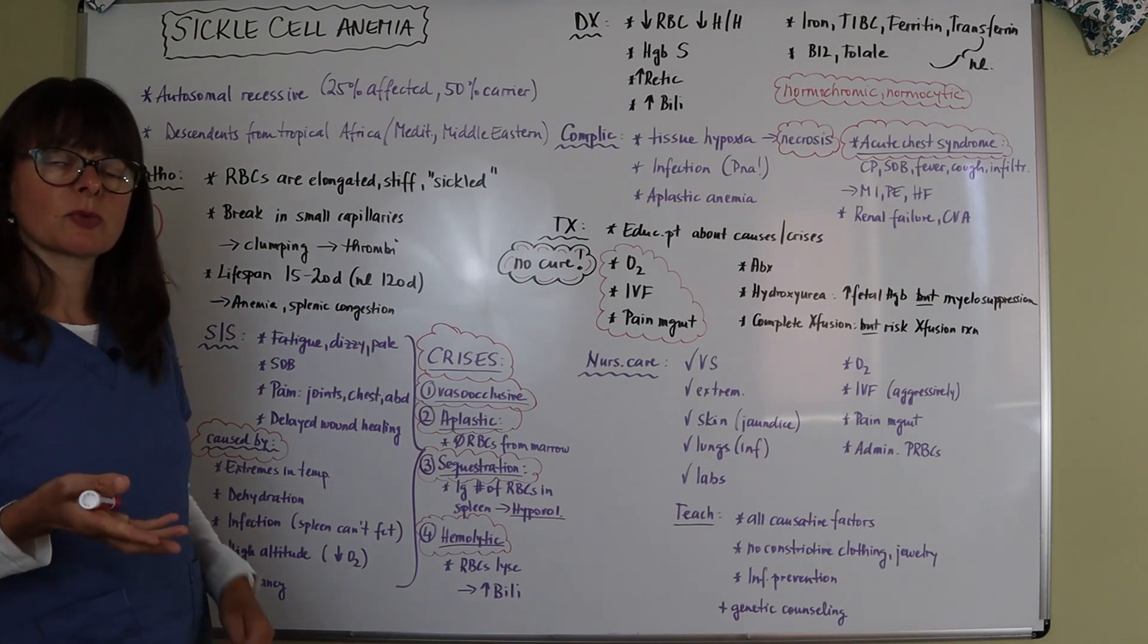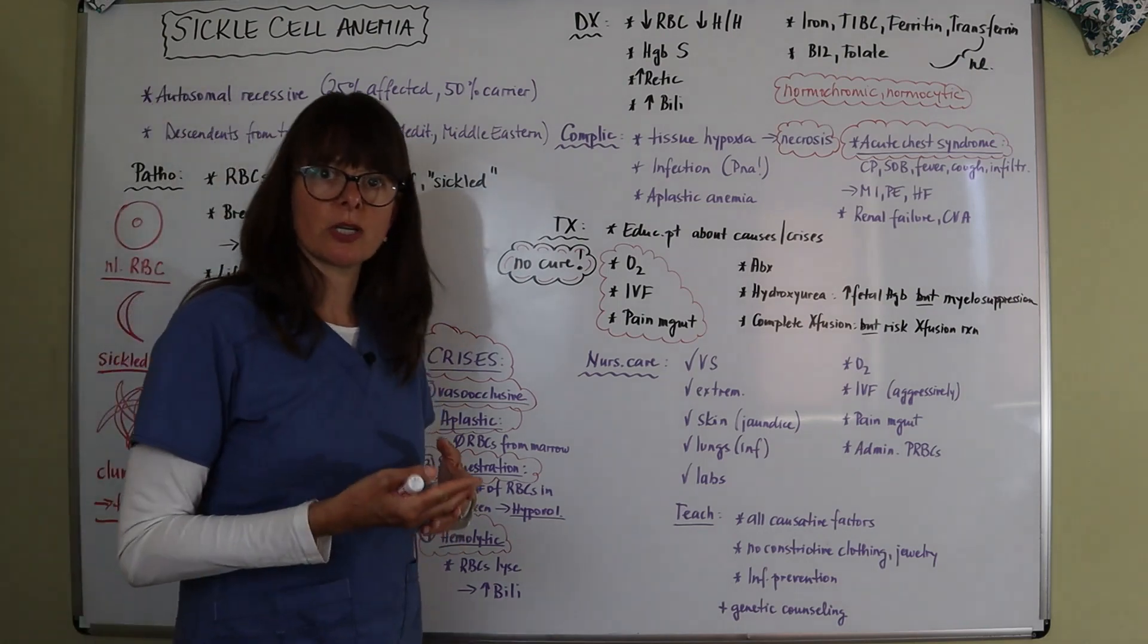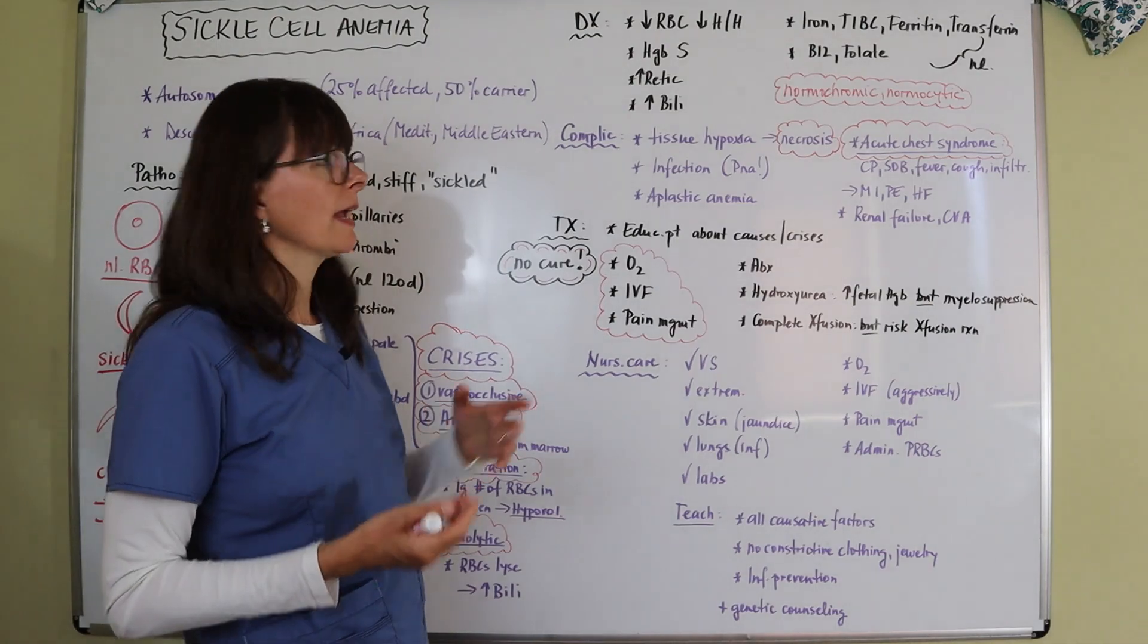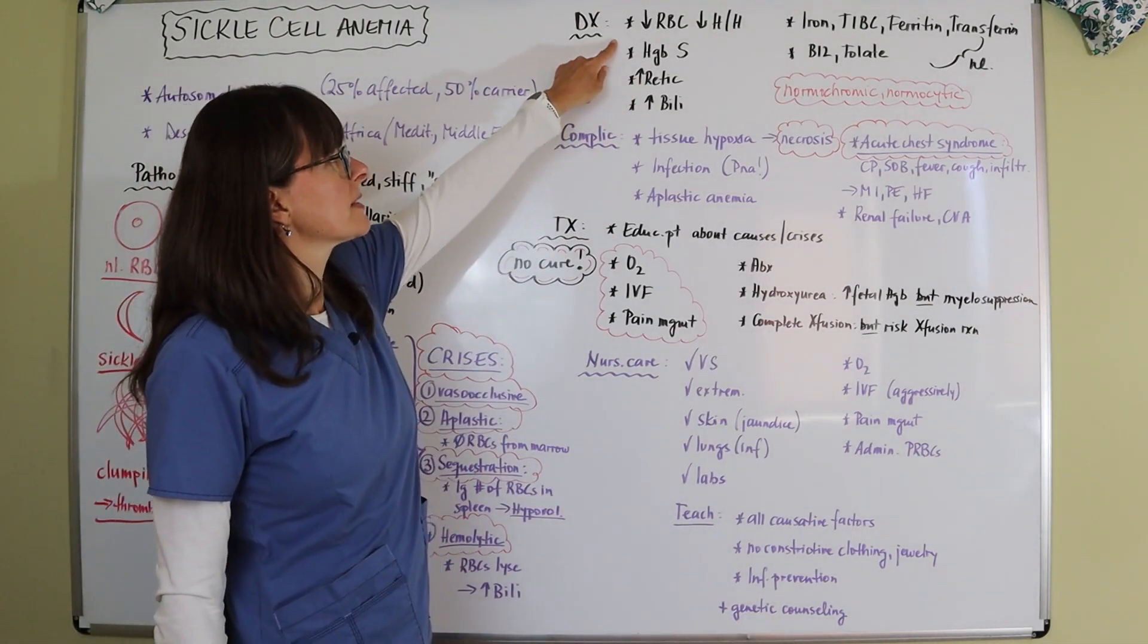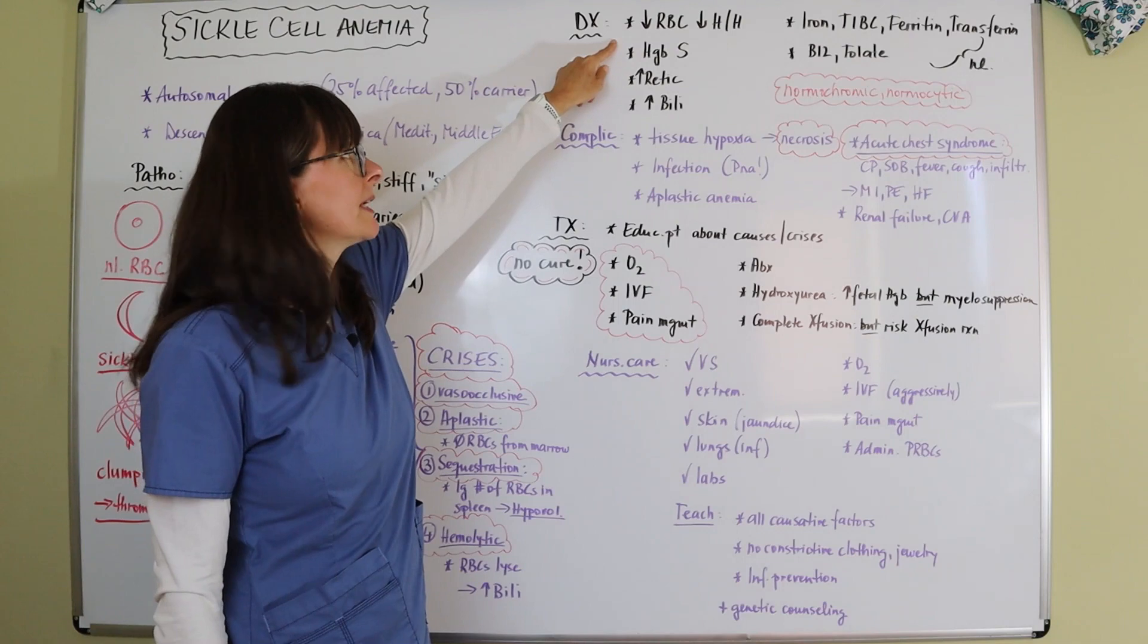For diagnostic tests, as with any type of anemia, we're always going to check a CBC, a complete blood count, and the patient's red cells and H&H will be low as in any type of anemia.